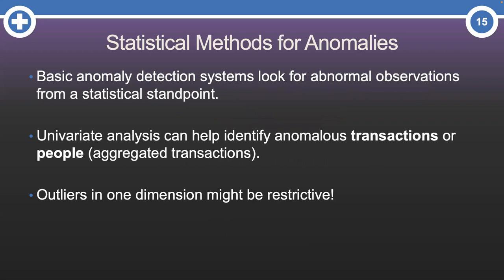Remember from the last video, when it comes to basic anomaly detection, statistical methods can be used to look for anomalous observations. In the last video, we started by looking at one variable at a time to help identify anomalies of that single variable.